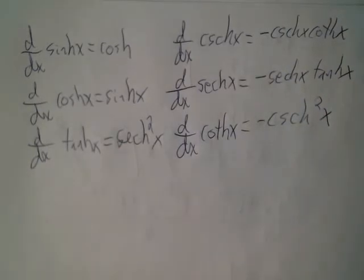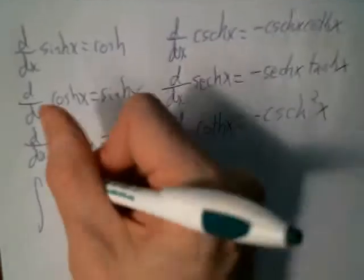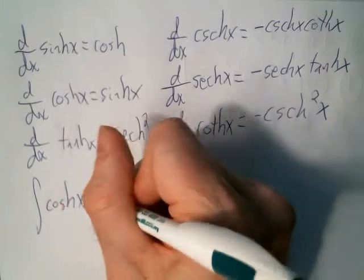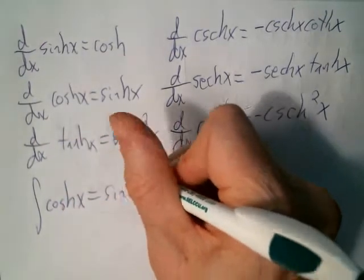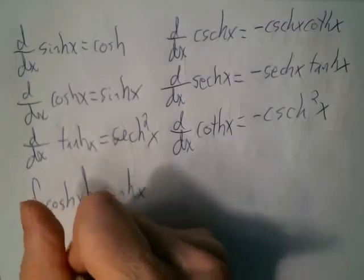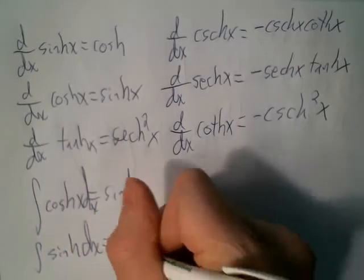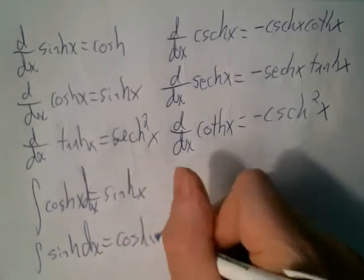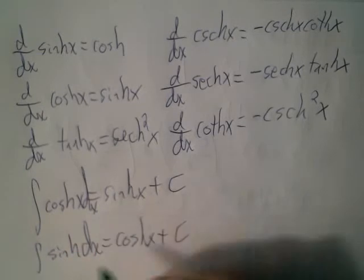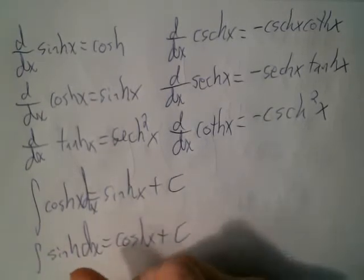As soon as you know all the derivatives, you know all the integrals. So the integral of hyperbolic cosine is sinh, et cetera. The three main ones — cosh, sinh, and tanh — are the ones we should know.